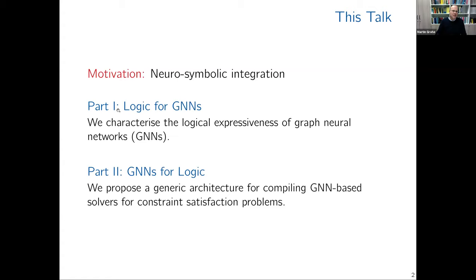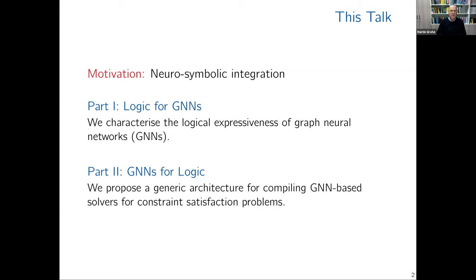The talk will have two parts. The first is: I use logic to describe graph neural networks, or rather the functions they compute — we characterize the logical expressiveness of graph neural networks. The second part goes the other way around: I'm trying to use graph neural networks to express logic. The first part is theory, the second is a bit more practical. What I will talk about there is a very generic architecture for solving constraint satisfaction problems using GNNs.